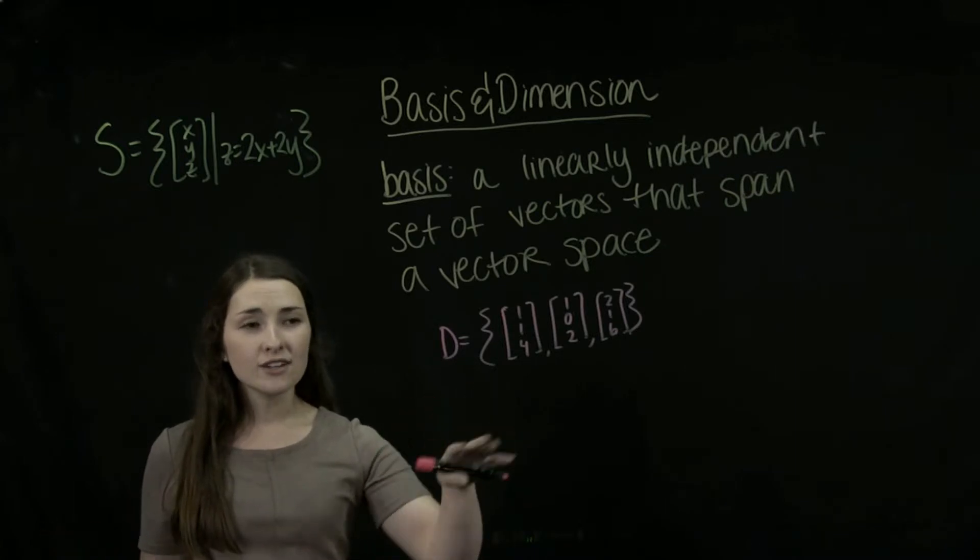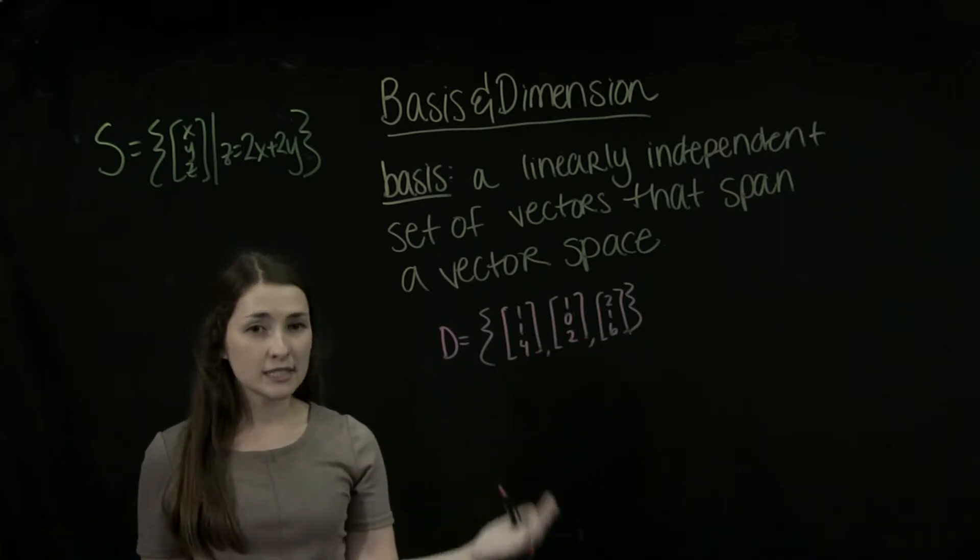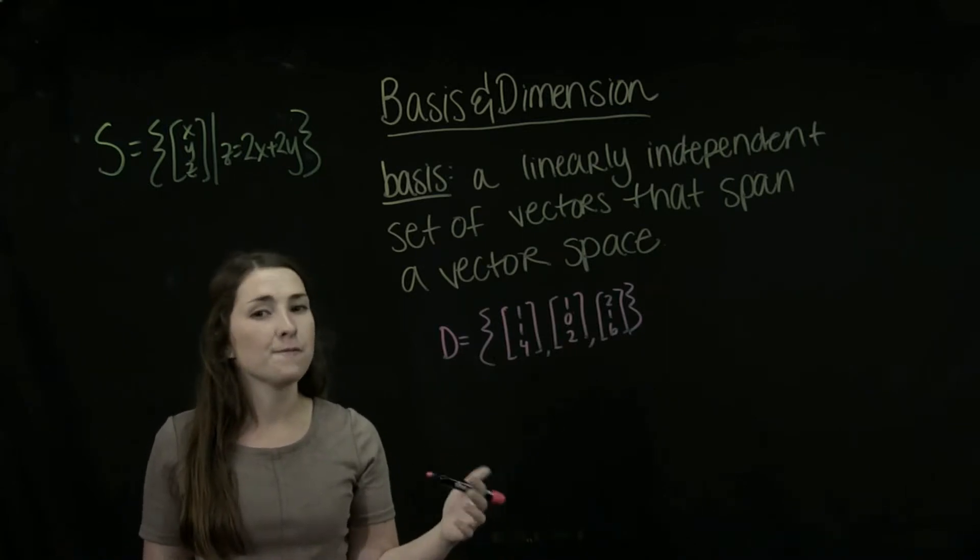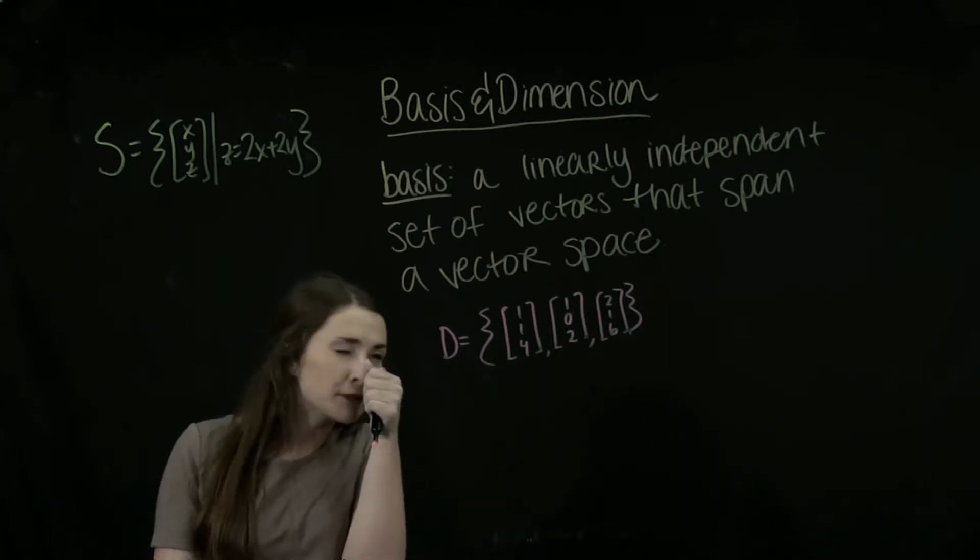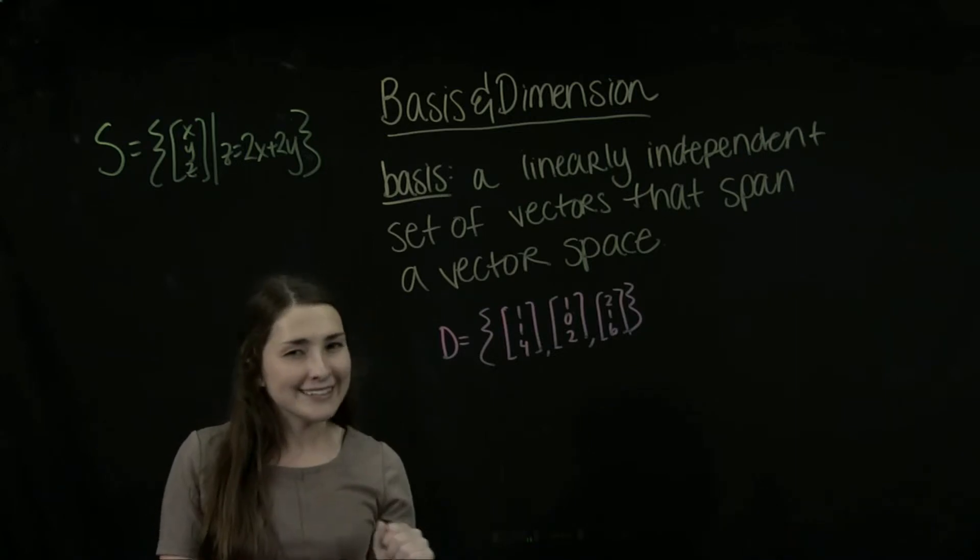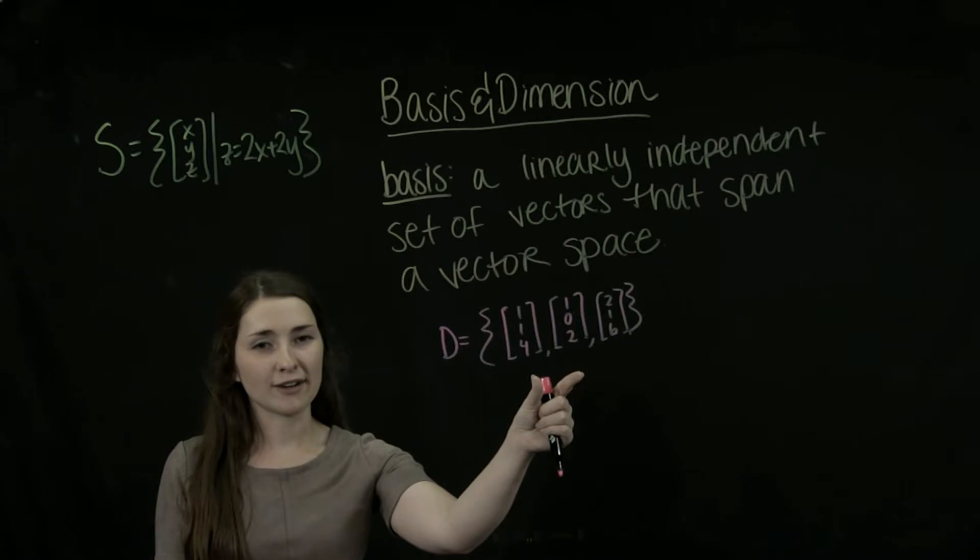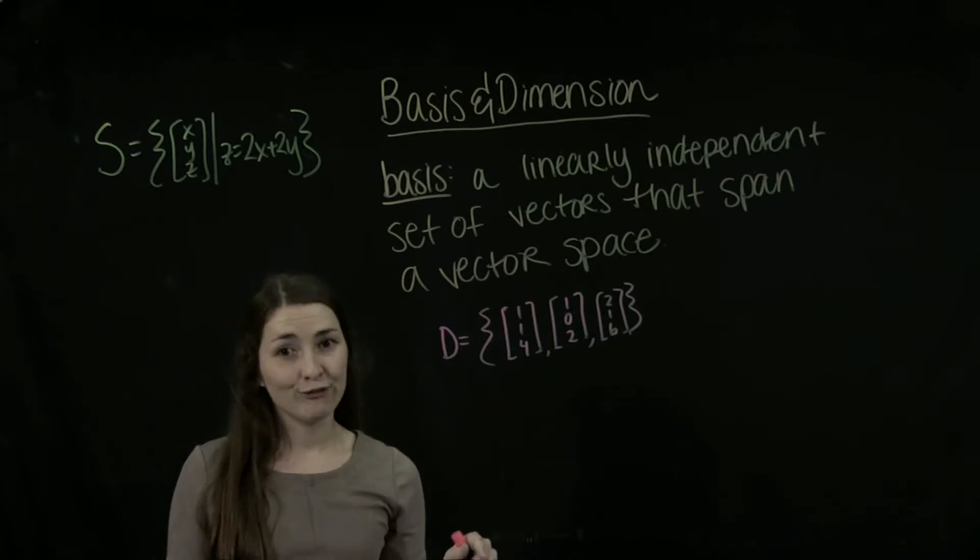So we know that this set here spans all of us. But is it linearly independent? Well, let's take out our magnifying glass and kind of inspect and be like, no, it's not linearly independent. Because if we add these two vectors together, we're going to get our third vector here.